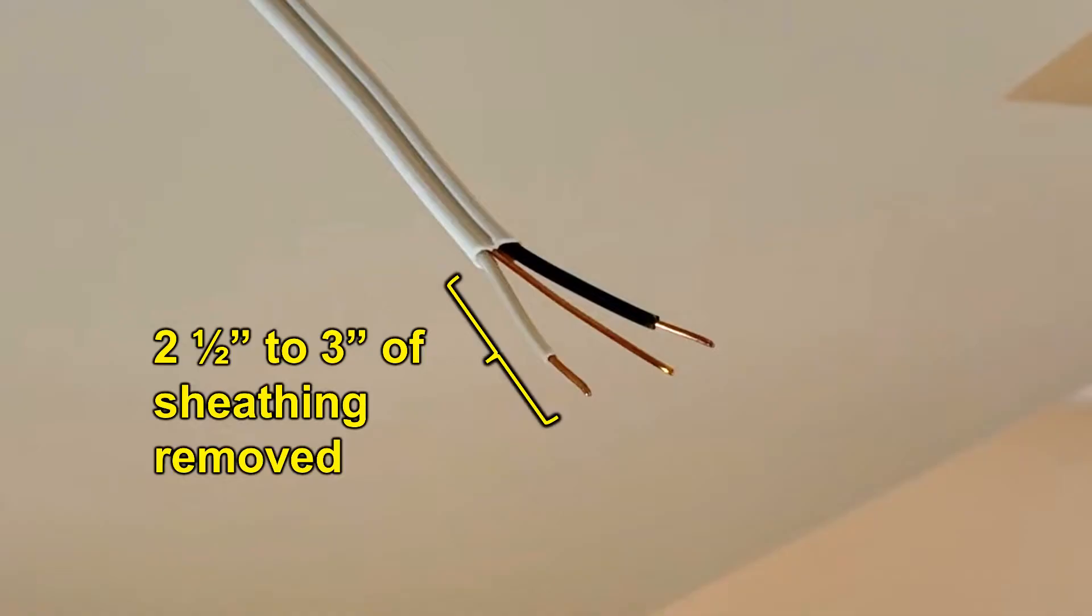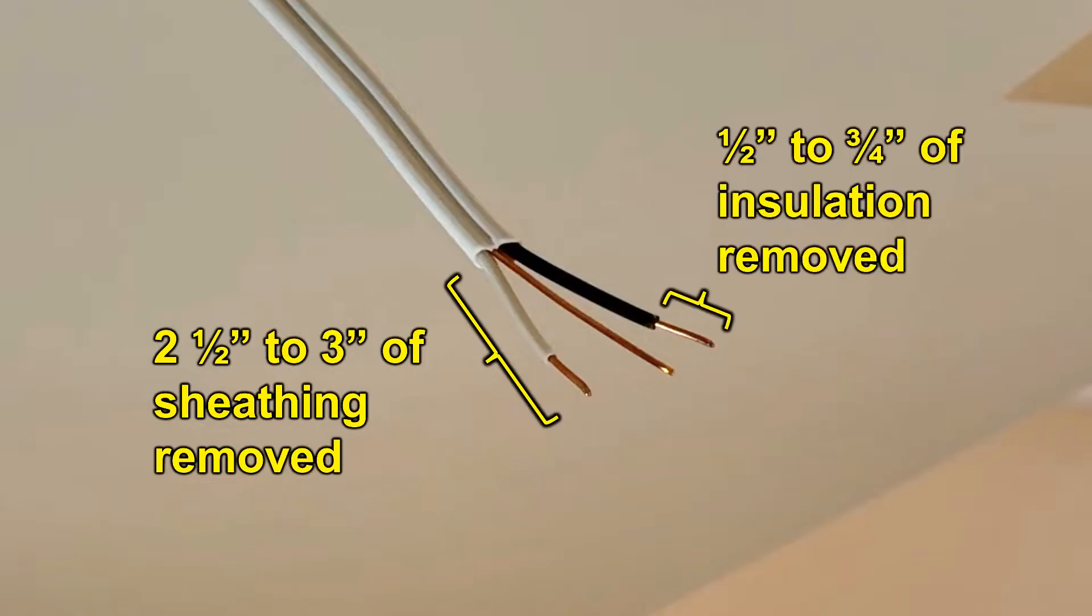Now after you run the wire you should cut about two and a half to three inches of sheathing off of the cable, and each of the black and white wires should have about one half to three quarters of an inch of insulation stripped off. This prepares it so that it's going to be able to go into the housing for the light but not have too much wire in there that it causes a problem trying to fit everything in and close the top again.